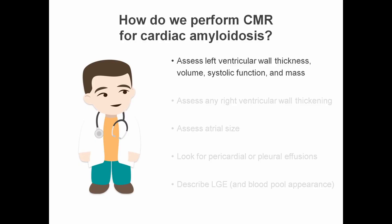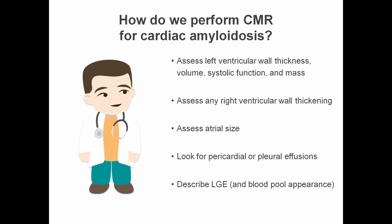In summary, CMR for cardiac amyloidosis can be used to assess left ventricular wall thickness, volume, systolic function, and mass. We can also assess any wall thickening affecting the right ventricle and the size of the left and right atria, and look for pericardial or pleural effusions. It's important to describe the pattern of myocardial late gadolinium enhancement and whether the blood pool appears darker than one would normally expect.